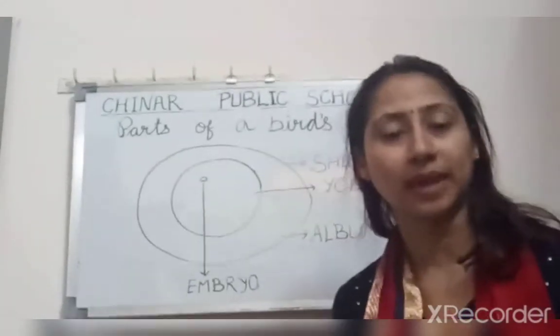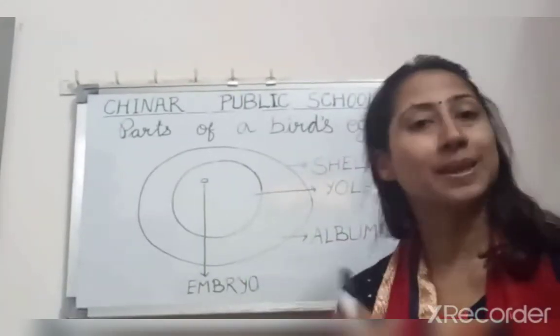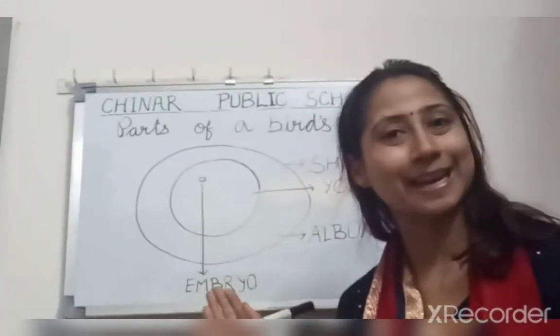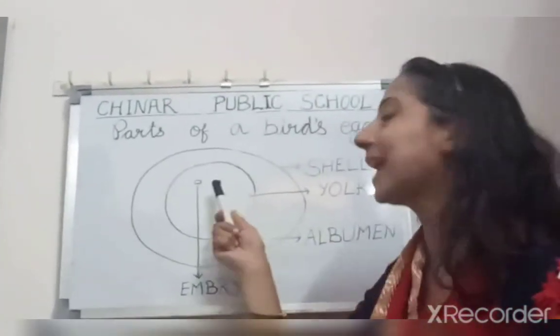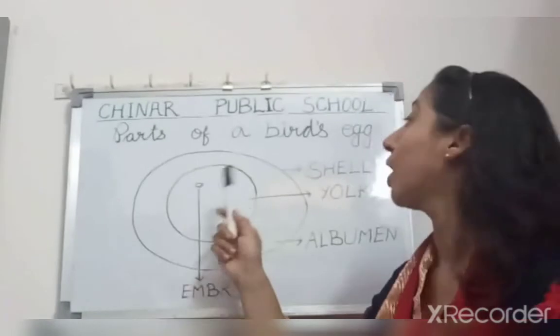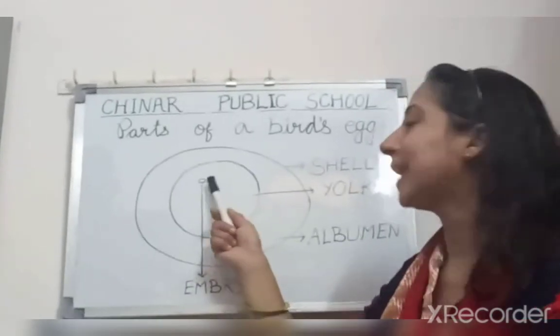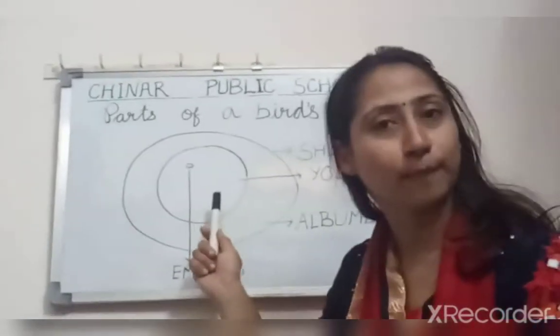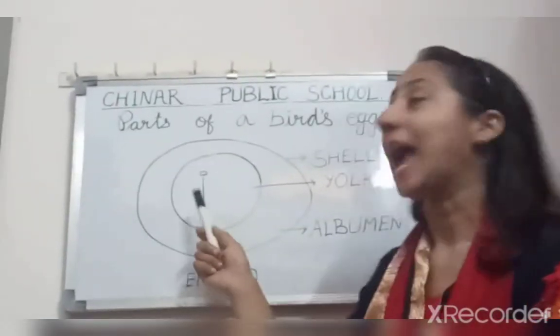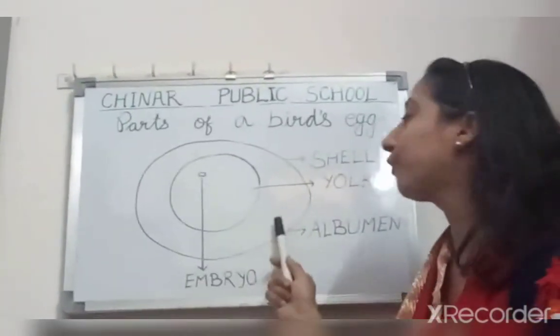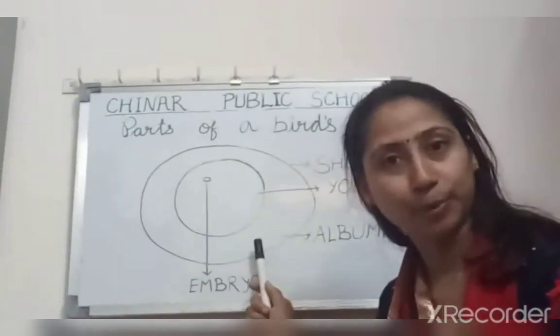What's an embryo? A growing baby — a baby that is growing inside an egg. That's an embryo. The embryo takes food from the yolk and water from the albumen.